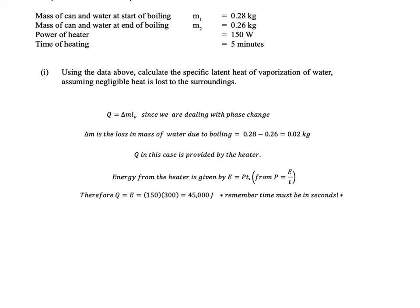Alright, so therefore the Q, which is the thermal energy, is equal to power times time: 150 times 300. So remember your time must be in seconds, so that 300 there is the 5 minutes in seconds. So it's 150 times 300, we get 45,000 joules. Alright, so that's our energy input from the heater.